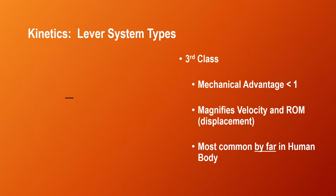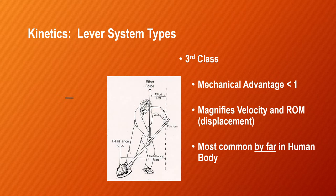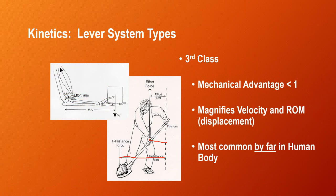A class three lever has a mechanical advantage of less than one — it magnifies velocity and displacement at the expense of force, and it is by far the most common type of lever in the human body. A mechanical example is a man with a shovel: the axis is his back hand, the effort arm is between his back hand and his front hand, but the resistance arm is between his back hand and the load in the shovel. So the effort arm is in between the resistance arm and the axis. In the human body, this is by far the most common type of lever that muscles make with joints.